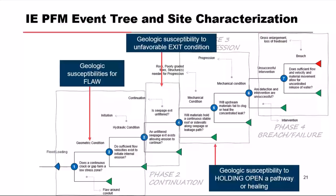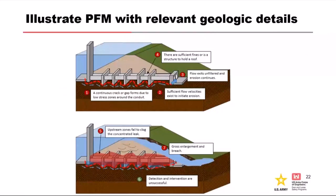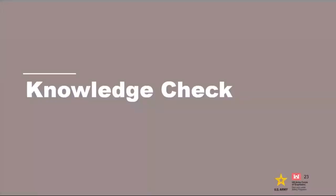You think about the geologic susceptibility to holding open a path. In order for internal erosion to occur and reach breach, you often have a void that has to be able to stay open — whether it's a roof or whether it's material with some plasticity that can hold open a void. You also need to be able to illustrate your potential failure mode for different levels of risk assessments, providing something that shows the geologic features as well as how you're thinking about the failure mode — in plan, profile, or a 3D view.